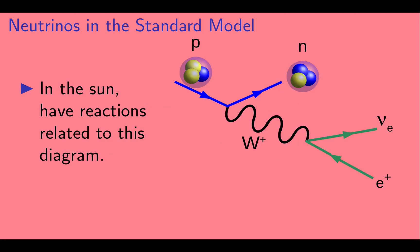So, in the Sun, we have reactions that are related to the diagram we saw before, or a closely related diagram where instead of producing a positron, we destroy an electron.